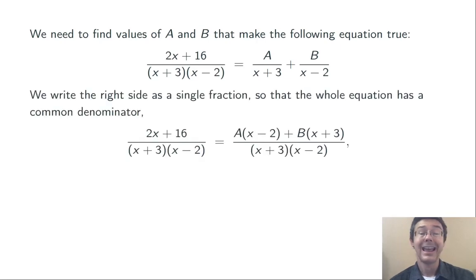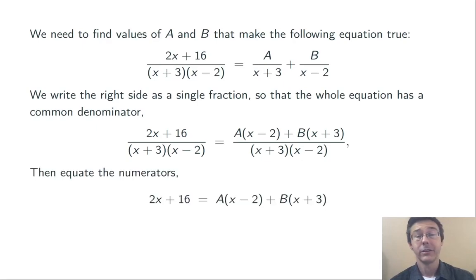Here we end up getting A(x - 2) + B(x + 3) all over (x + 3)(x - 2). Now the denominators are the same, so the numerators have to be the same.